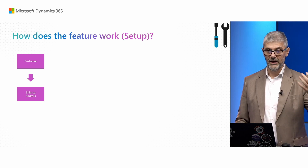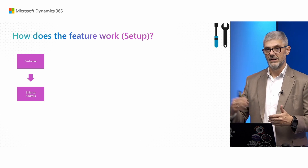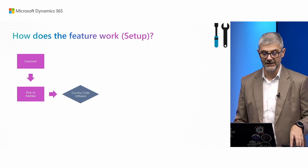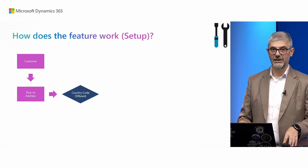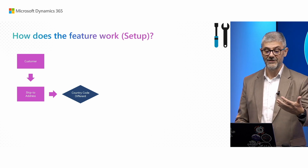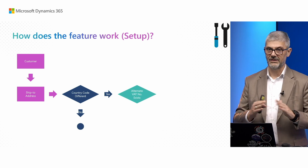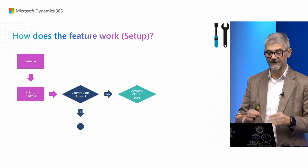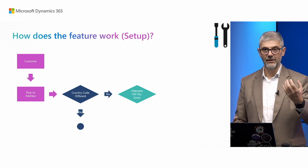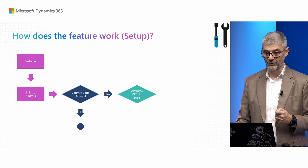Then you get a phone call — your customer ordered something and wants to add a new ship-to address in a different country. You need to open the ship-to address for this customer in Business Central. Once you create this new ship-to address, if the country code is different, you need to configure it. If not, it is business as usual. But if the country code is different, the system will first check if you already have a configured alternative VAT number for that country related to this ship-to address.